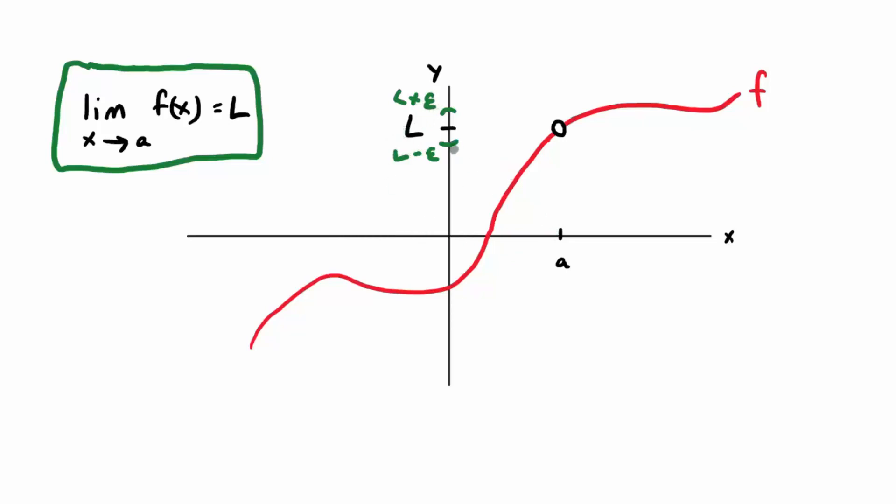All we have to do is create an epsilon band around L. So what do I mean by that? Go out horizontally from the lower bound height till you intersect the function. And then go out horizontally from the upper bound height until you intersect the function. And then go down vertically from those intersection values.